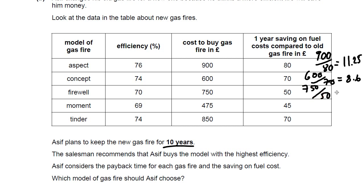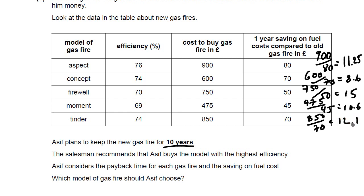Another model costs £750 with a £50 annual saving: 750 divided by 50 gives 15 years — he'd still be paying that off after getting rid of it. Another costs £475 with £45 annual saving: 475 divided by 45 is 10.6 years — still not saving money in his 10-year window. And 850 divided by 70 gives 12.1 years — longer than he plans to keep it. So economically there's no point buying anything apart from the Concept. The efficiency data was essentially a red herring to get you comparing efficiency rather than payback cost.